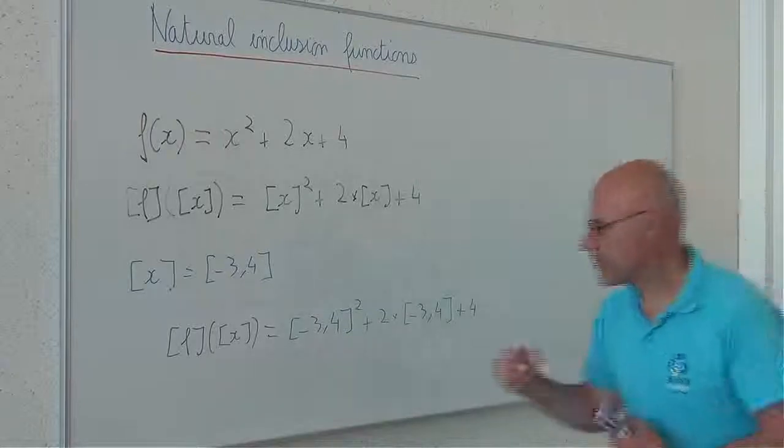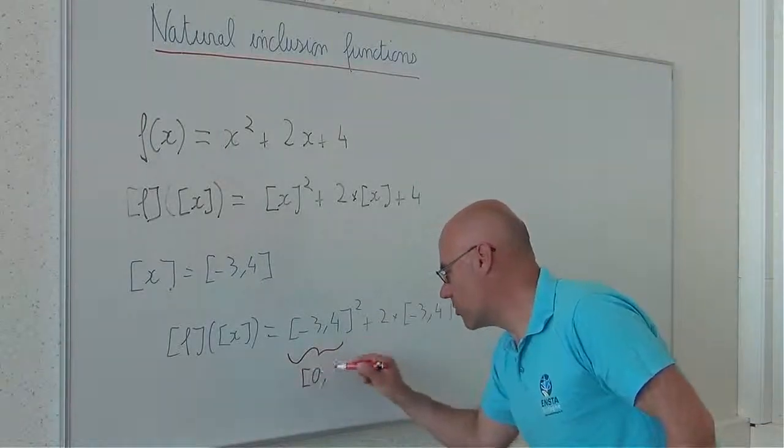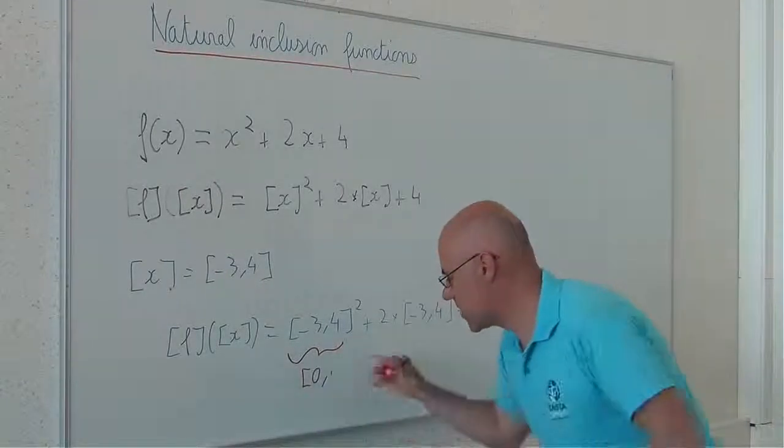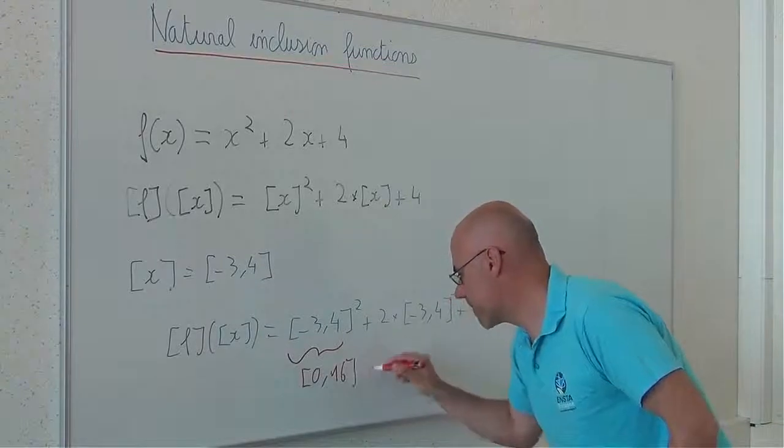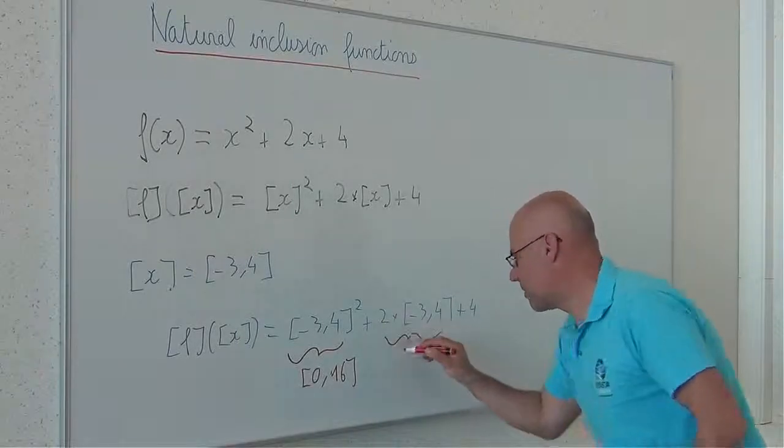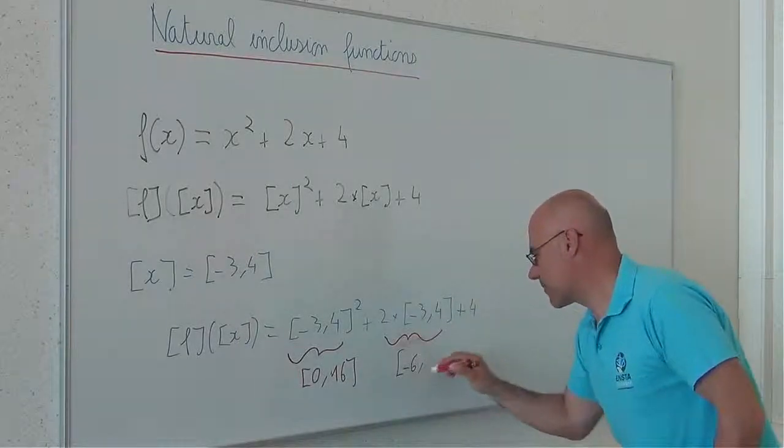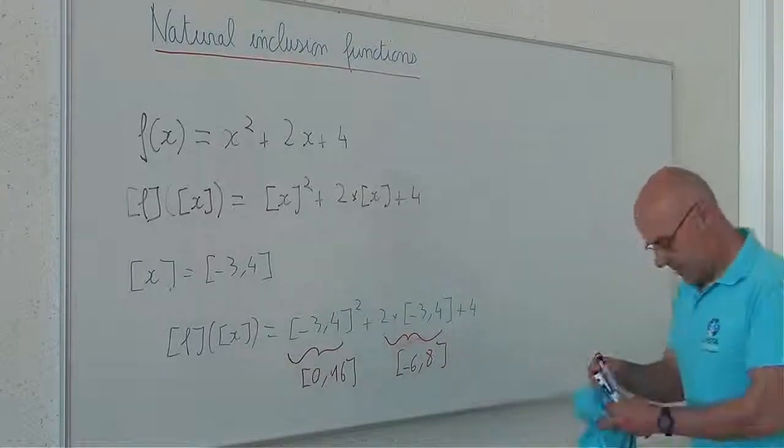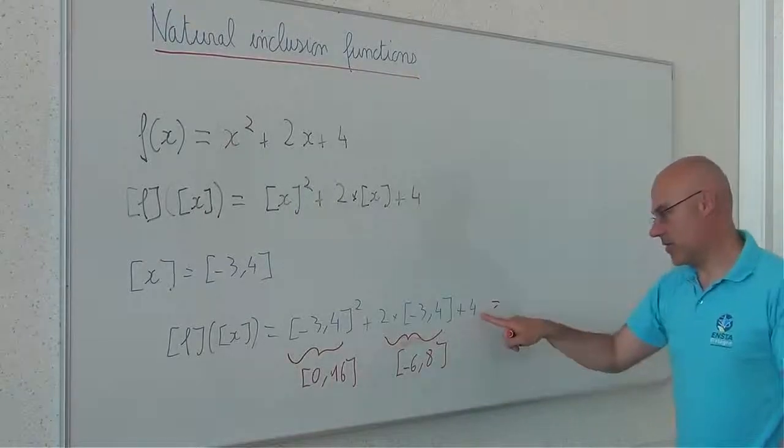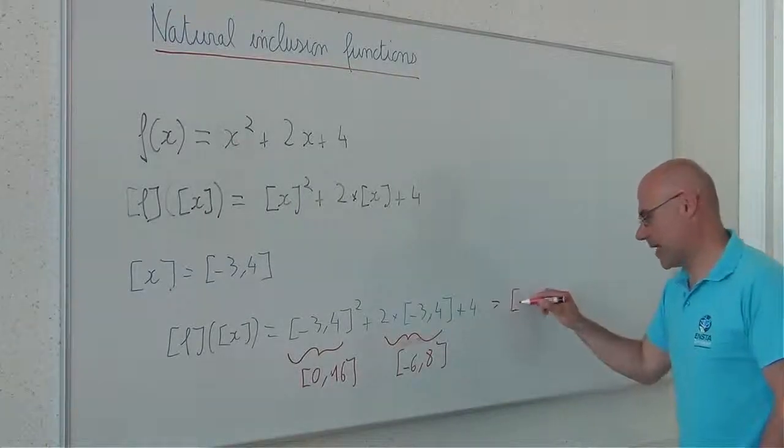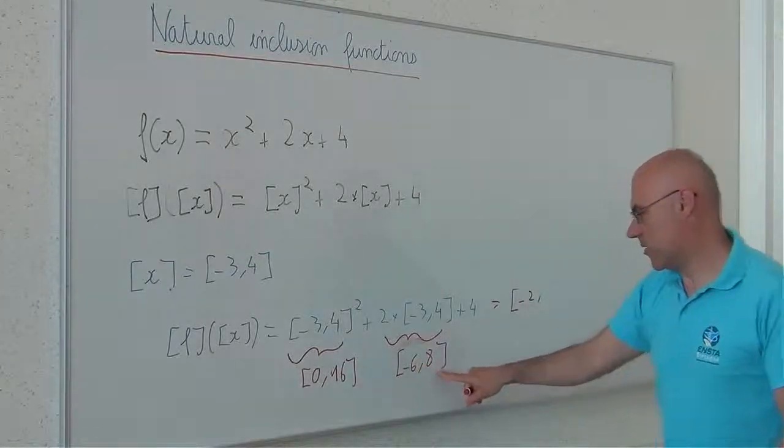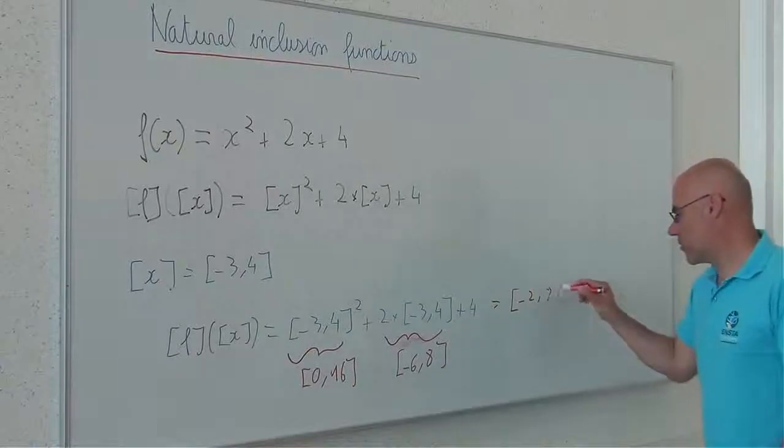This one is given by [0, 16] plus [-6, 8] plus [4, 4]. And if I add this interval plus this interval plus this one, I will obtain -2 on the left and 28 on the right, giving us [-2, 28].